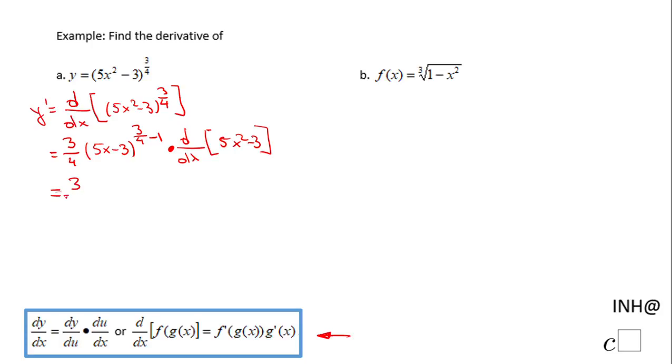We have to do some simplification. First, 3/4 times (5x² - 3) to the power of 3/4 - 1, which will be -1/4. And the derivative with respect to x of 5x² - 3 is 10x.